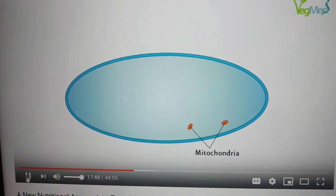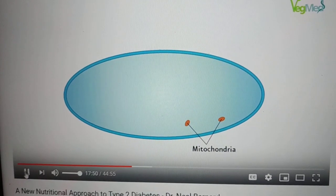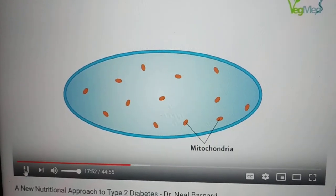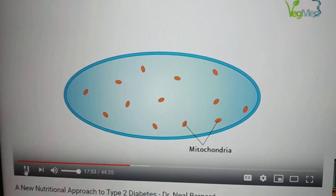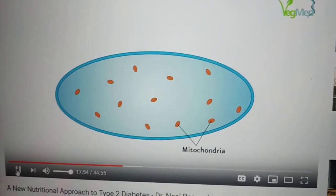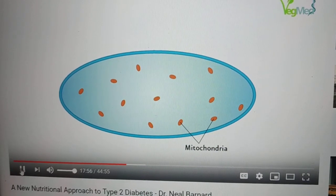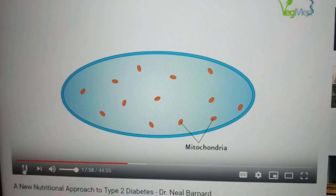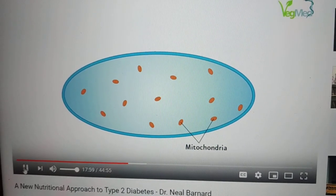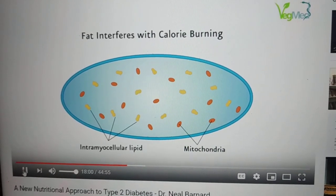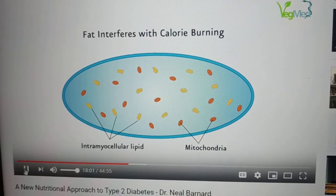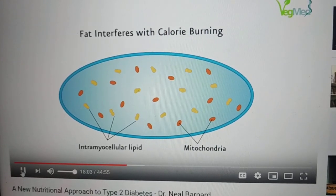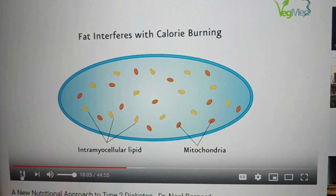Our mitochondria — you remember the mitochondria? Those are burners. They turn food into energy. And you have a lot of them. But you have something else: you have fat. Fat inside the cell.